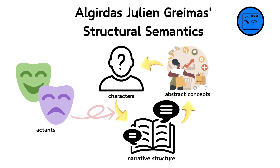Central to Greimas's theory is the concept of actants — key roles within narratives that can be filled by characters or even abstract concepts. These roles include subjects (seekers), objects (sought-for), helpers, opponents, senders, and receivers. This framework helps to dissect the narrative structure, revealing how roles and relationships drive the narrative forward and contribute to the overall meaning of the text.